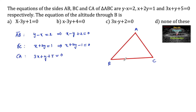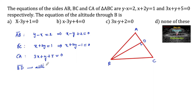The three sides of the triangle are given and we need to find the altitude through B. So let us take an altitude through B. The altitude is drawn perpendicular to side AC. Let us consider this altitude as BD.